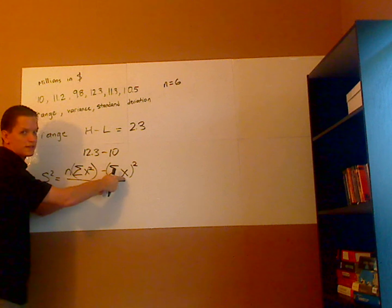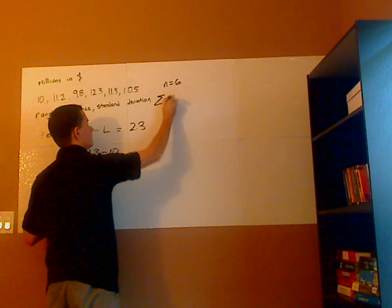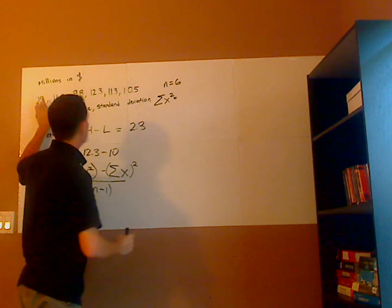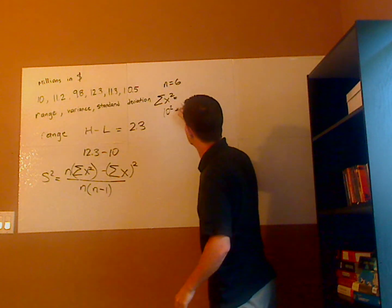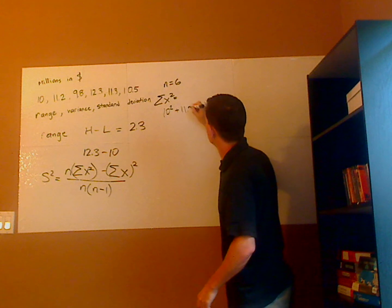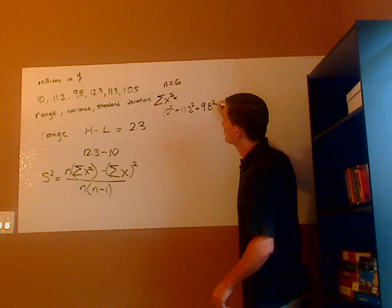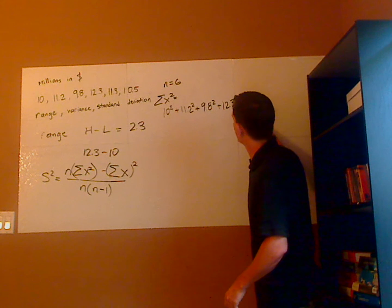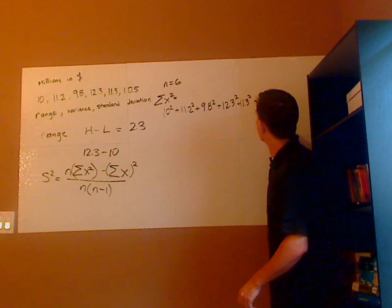I already know what n is. N is 6, so you need to calculate this right here and then this right here. So the summation of x squared would be each of these squared. I'm going to add each one, so it's 10 squared plus 11.2 squared plus 9.8 squared plus 12.3 squared plus 11.3 squared plus 10.5 squared.